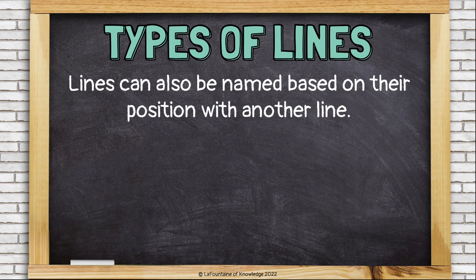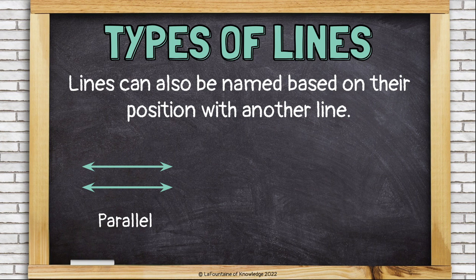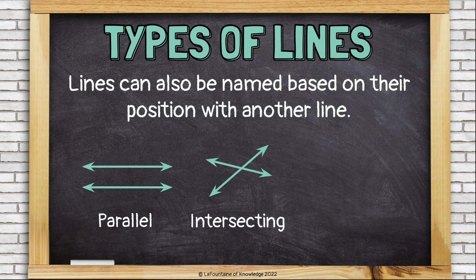Lines can also be named based on their position with another line. These are parallel lines. They run side by side, equal distance apart, and they will never cross. These are intersecting lines. Intersecting is just a math word that means crossing. So anytime lines cross, they're intersecting.